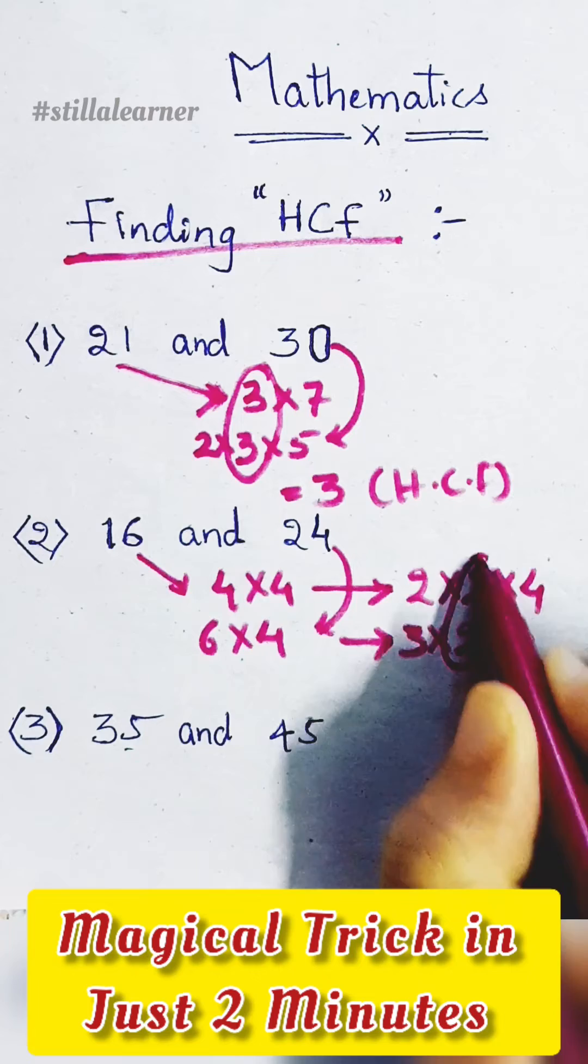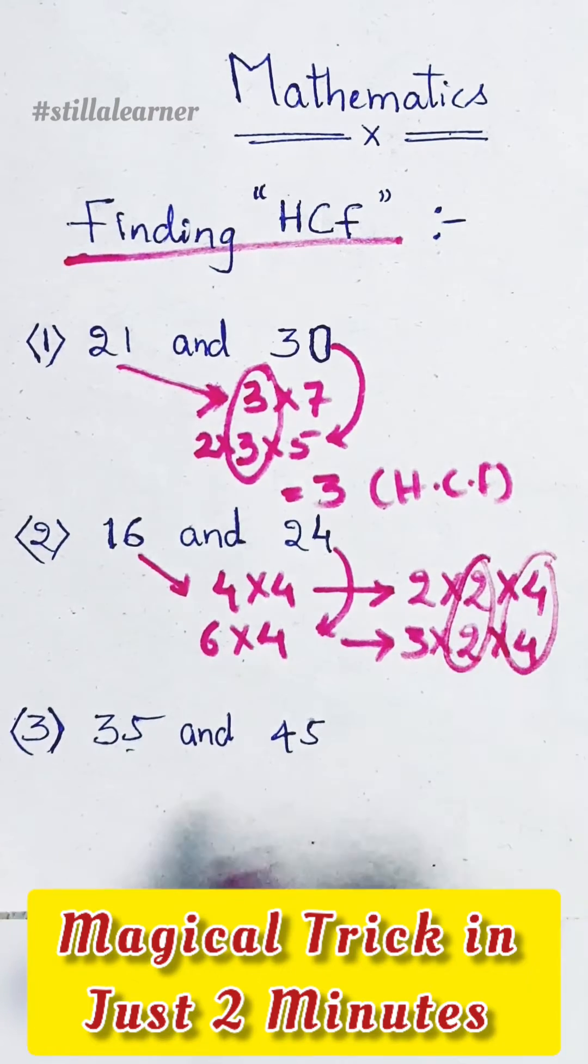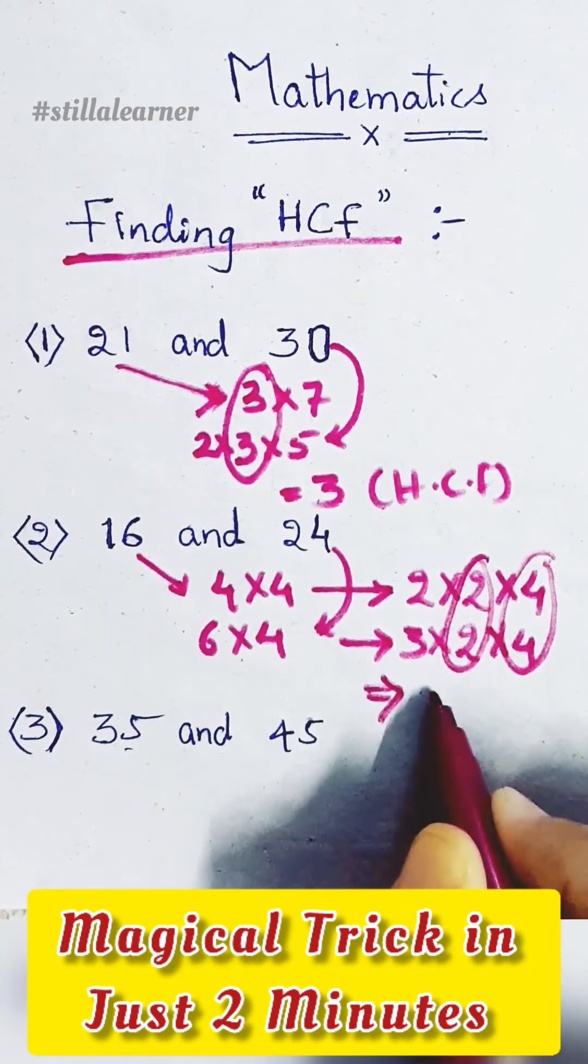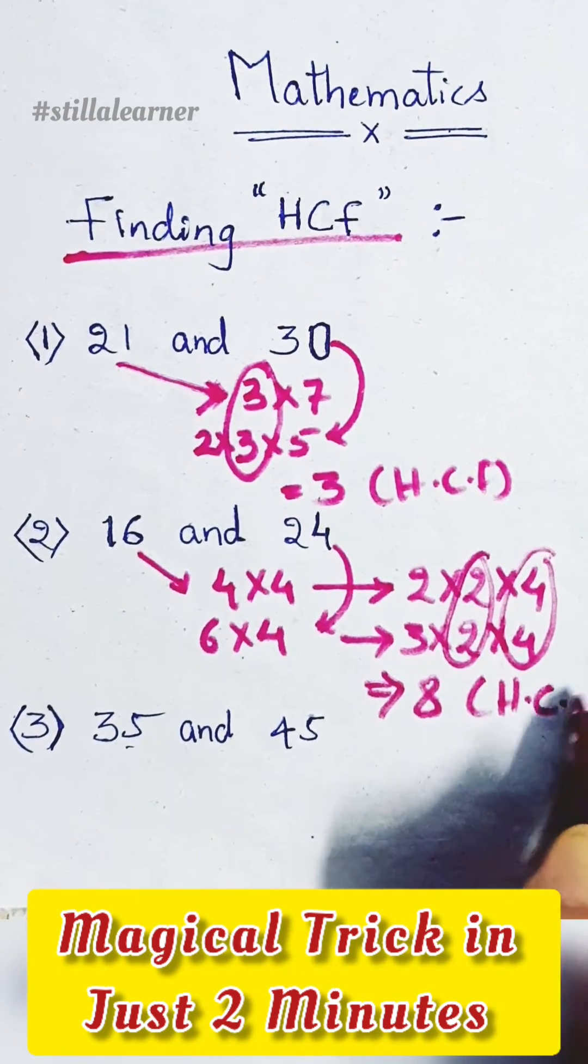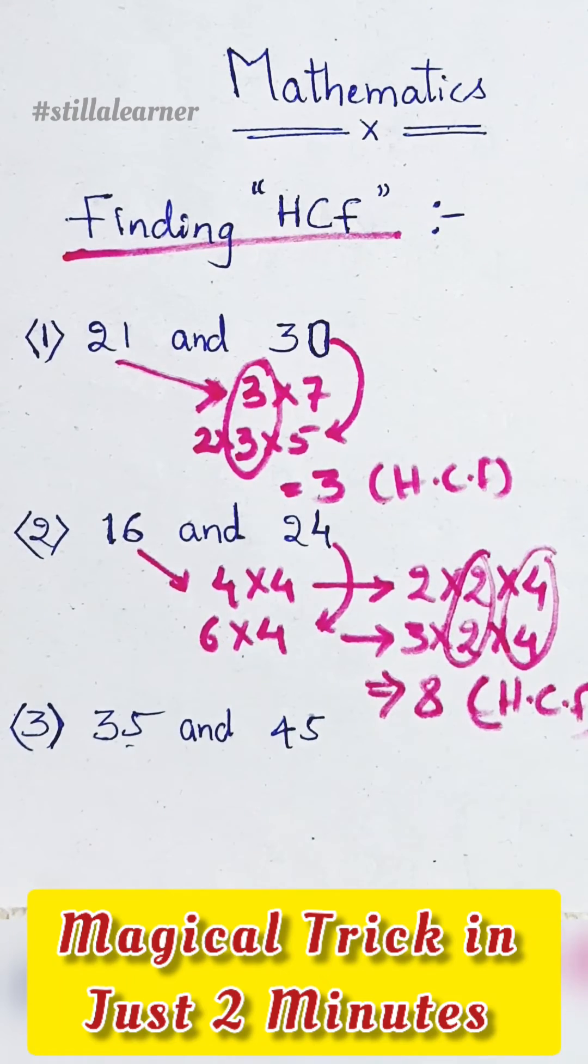4 is common and 2 is common. Just round off 2 and 4. 2 times 4 equals 8. So the highest common factor of 16 and 24 is 8. So 8 is our answer.